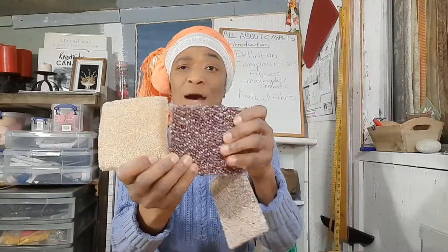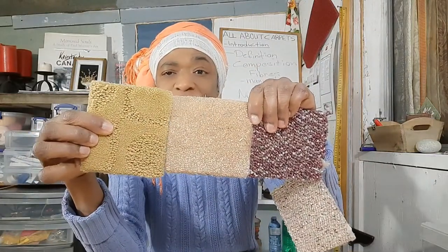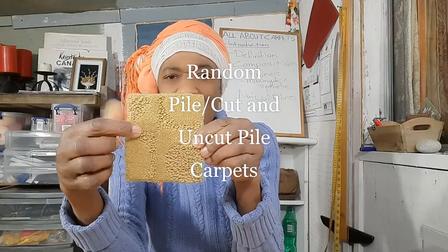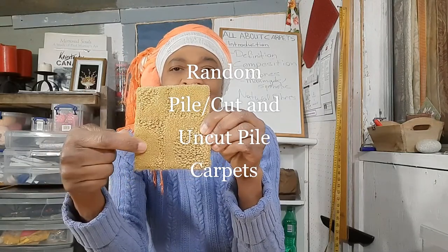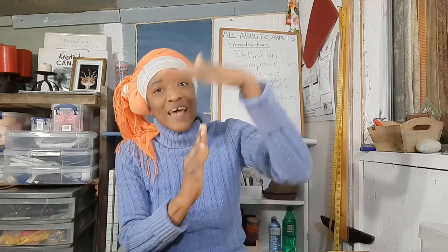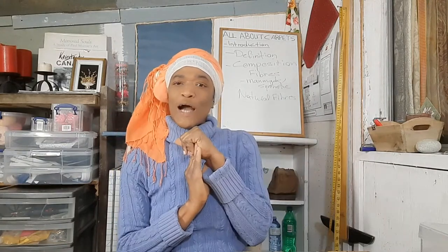These two marry into one carpet and create a third type, which is a random pile carpet. Here you can see your uncut pile and your cut pile combined. So we have three primary types of carpets, and each of those has some secondary types that come under them.